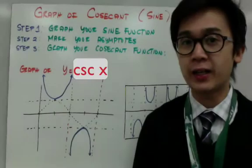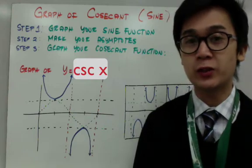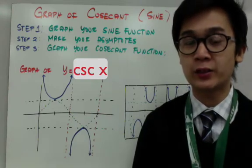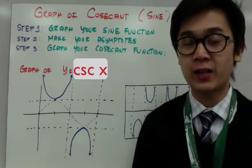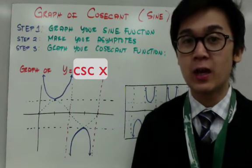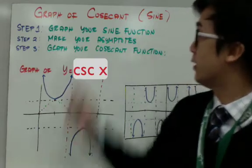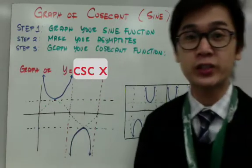We're going to graph the inverses of sine and cosine functions. The inverse of sine is cosecant and the inverse of cosine is secant. We're going to start with a graph of the cosecant function.